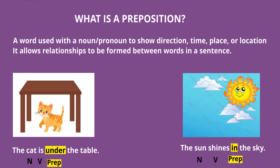In the second picture you can see a sun in the clouds. The sun shines in the sky. So where is the sun shining? In the sky. Sun is the noun in the sentence. What is the sun doing? Shining — so 'shines' will be the verb. And what is 'in' doing? 'In' is our preposition. It is connecting the noun, the sun, and telling us where it is located. The sun shines in the sky — where? In the sky. So 'in' is the preposition in this sentence.